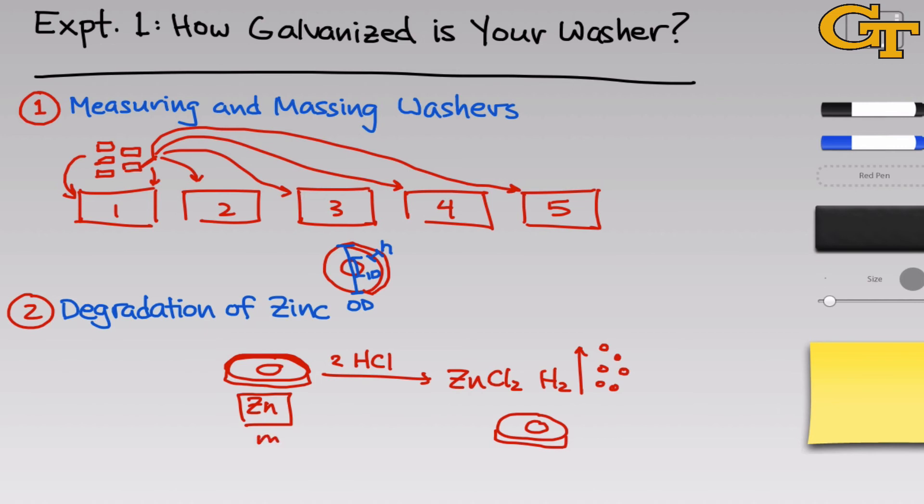Using this mass and the density of zinc which we can look up, we can determine the volume of zinc atoms, and assuming that that volume is spread uniformly over the washer surface, we can use the surface area, which we can again calculate from our measurements, to determine the thickness of that zinc layer.